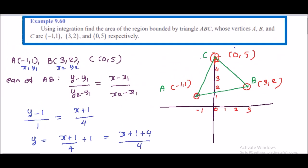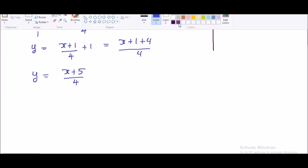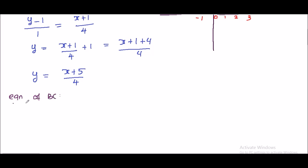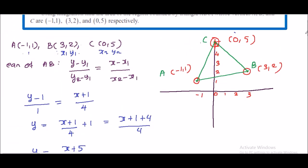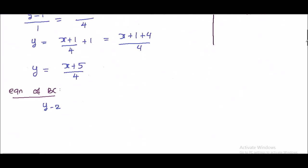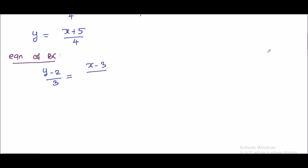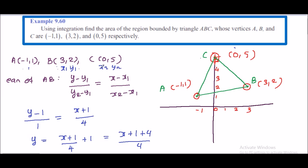Second equation is for line BC. BC has points B(3, 2) and C(0, 5). This is x1, y1 and x2, y2. Using the same formula: (y - 2) / (y2 - y1) = (x - 3) / (x2 - x1). x2 is 0, so x2 - x1 = 0 - 3 = -3.